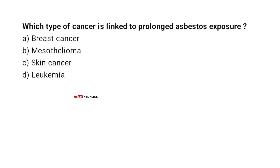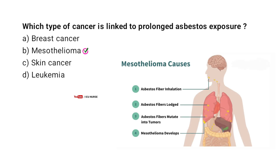Which type of cancer is linked to prolonged asbestos exposure? A. Breast cancer. B. Mesothelioma. C. Skin cancer. D. Leukemia. Correct answer: B. Mesothelioma is a rare cancer that develops in the lining of the lungs or abdomen due to asbestos exposure.